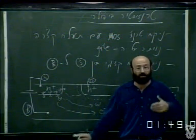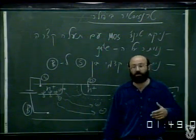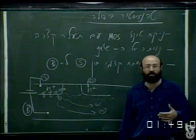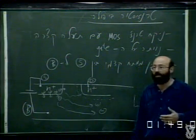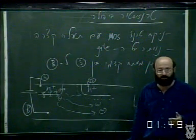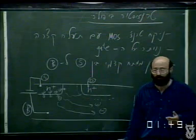וייתכן שאילו חברת בל הייתה שומרת לכמה שנים טובות את הבלעדיות על הפטנט, הייתה רושמת פטנט, אז האנושות לא הייתה מגיעה באותו קצב למה שהגיעה.